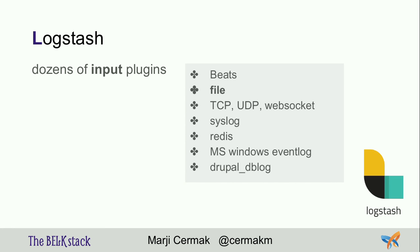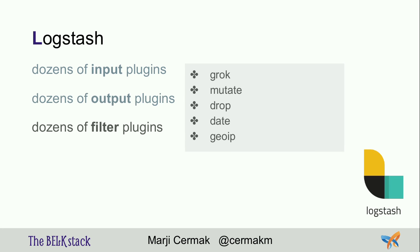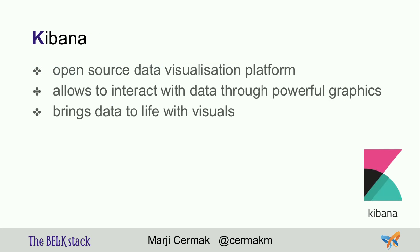Beats is the new input type. There are also dozens of output plugins. After you process data in Logstash, you can store it in a file again, send it via TCP/UDP/WebSocket, store in syslog, put in a message queue, send to a metrics storage system, store in S3, or store it in Elasticsearch. And there are filter plugins Logstash uses for manipulating and enriching the data, which we'll cover later.